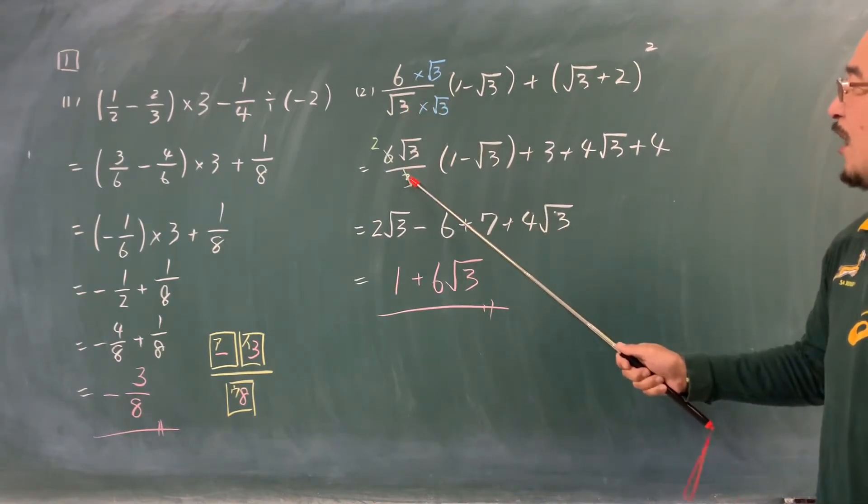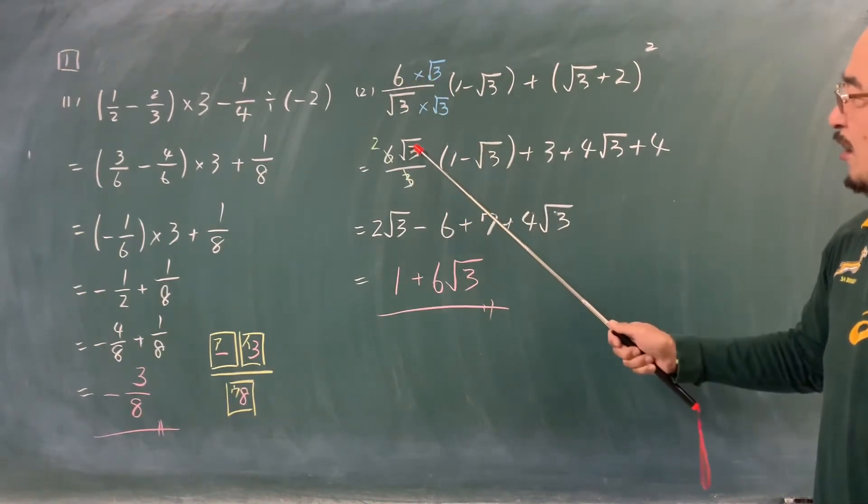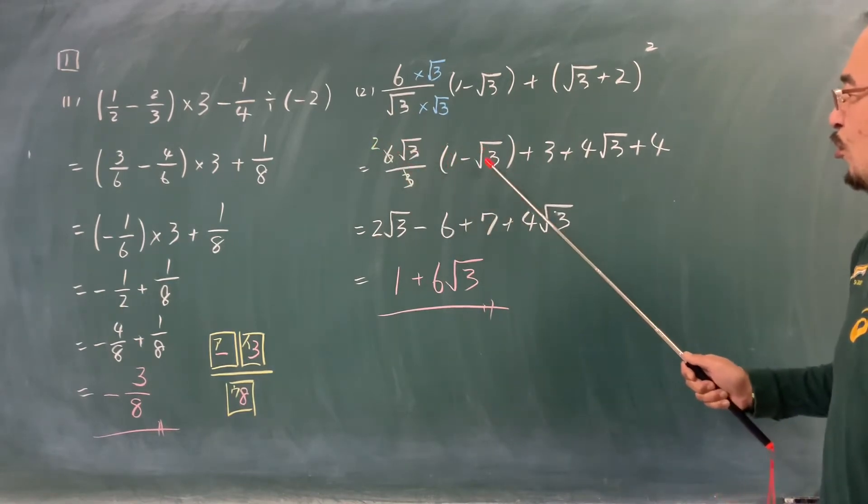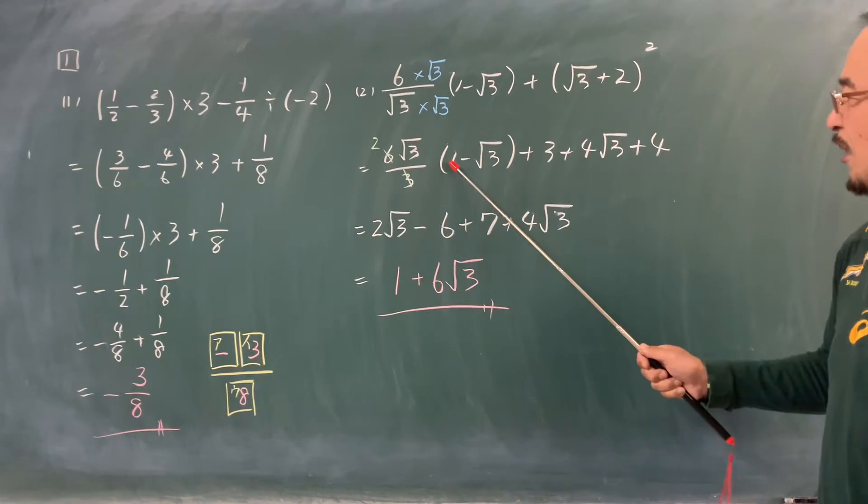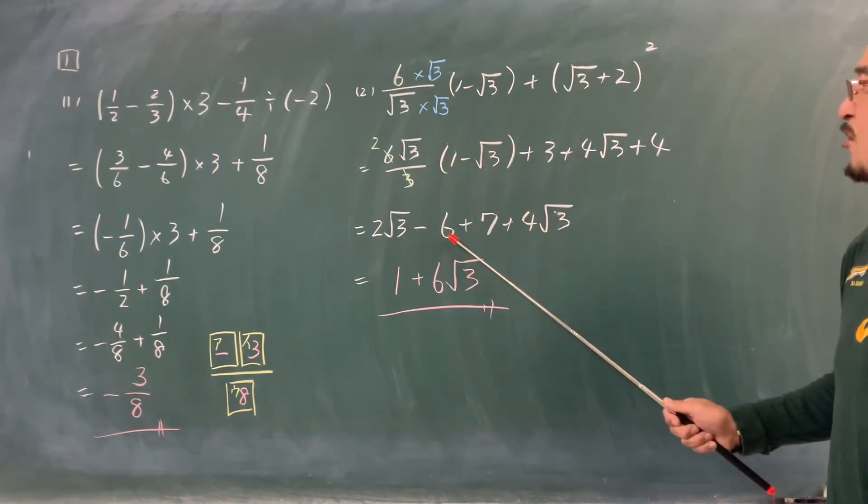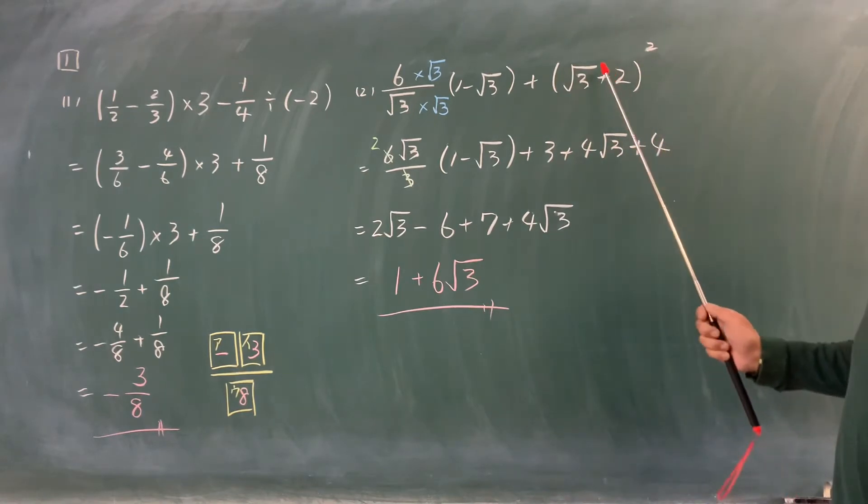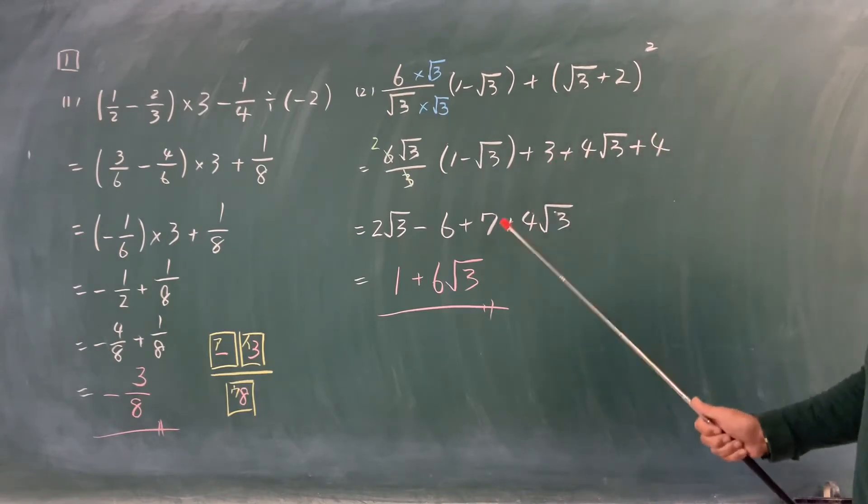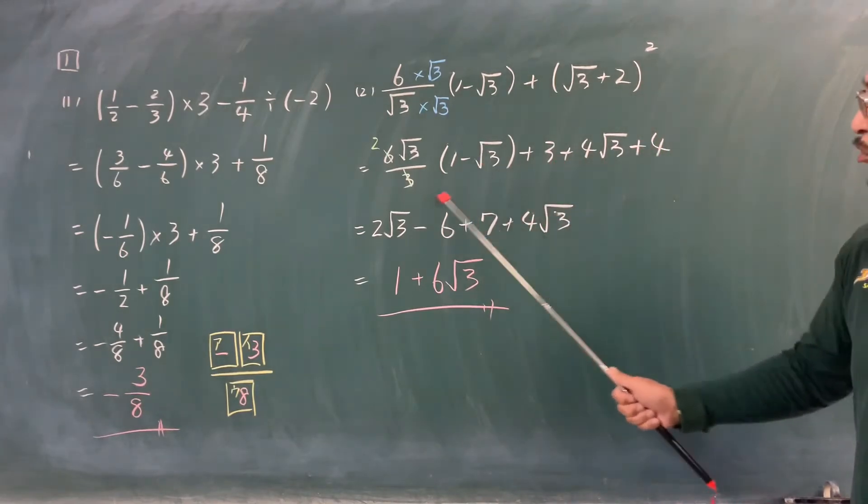括弧に、まず分母の有理化。ここ分母分子にルート3をかけます。ルート3かけるルート3で3で6ルート3。ここ3で約分で2ルート3。2ルート3かける1で2ルート3、2ルート3かけるマイナスのルート3でマイナスの6。